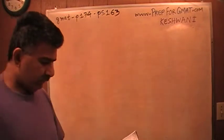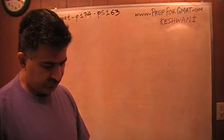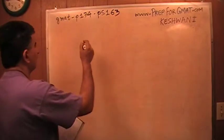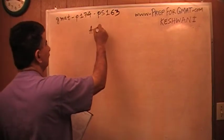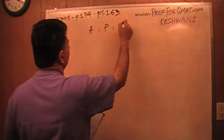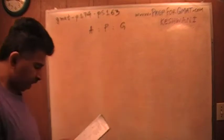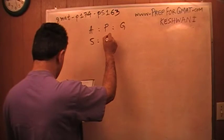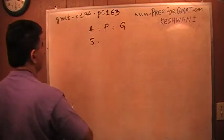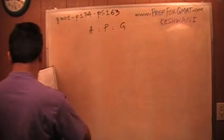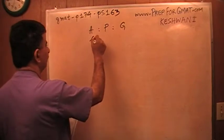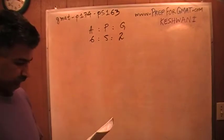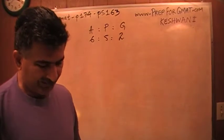It says a fruit salad mixture consists of apples, peaches and grapes in the ratio of 5 to 6 to 2 respectively, obviously by weight.